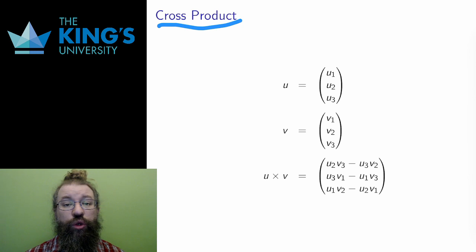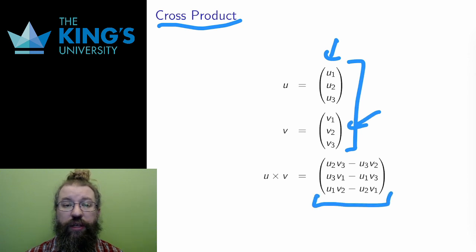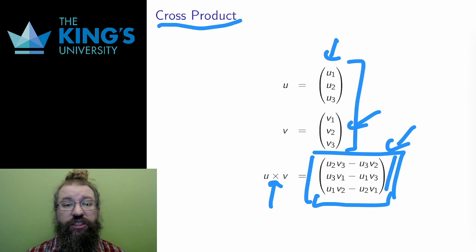Here's the definition. For two three-dimensional vectors, u and v, I write both as coordinates. Then the cross product, written with this old-school multiplication symbol, is another vector in R3 whose coordinates are these strange multiplications and subtractions. This is just a pattern you have to learn to use, though of course you don't have to memorize it, you can reference it in the notes or other places.